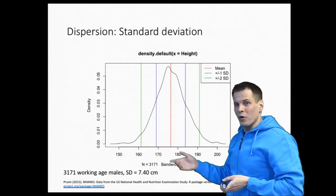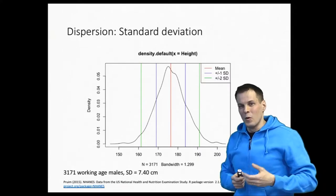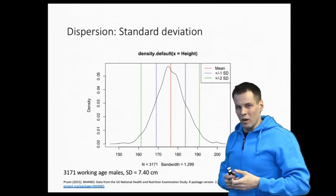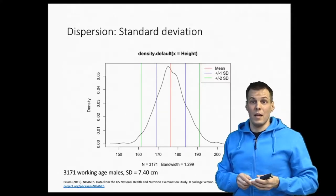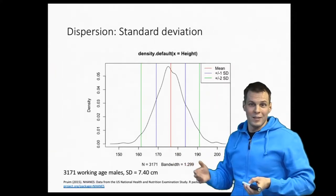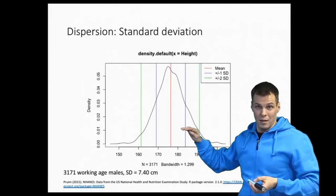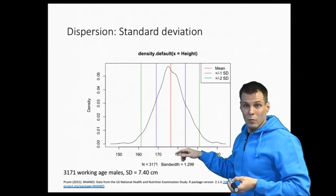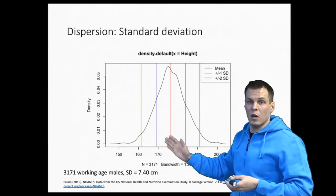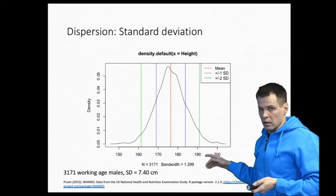There's a joke about why standard deviation is important. Two statisticians — one is 150 centimeters tall and one is 160 centimeters tall — are crossing a river that has a mean depth of 120 centimeters, and they're debating whether they should cross. They decide not to, because the mean doesn't tell you what the deepest part is. We have to understand how much the depth of the river varies, not just what the average depth is. Standard deviation tells us how much variation there is in the observations.